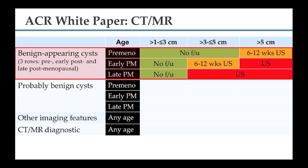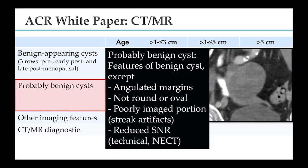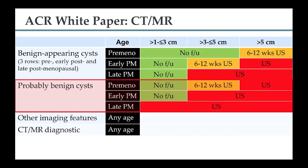For probably benign cysts, all recommendations shift to be more conservative. Probably benign cysts have features of benign cysts except they may have angulated margins, poorly imaged portions due to streak artifacts, reduced SNR for technical reasons, or come from an unenhanced study. For young women up to 3 cm, nothing needs to be done; after that, ultrasound either at 6 to 12 weeks or immediately for larger lesions. Early postmenopausal: up to 3 cm, nothing; after that, evaluate with ultrasound. Late postmenopausal: evaluate with ultrasound right away.